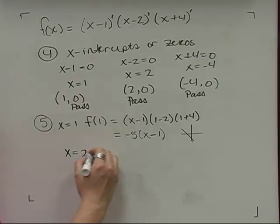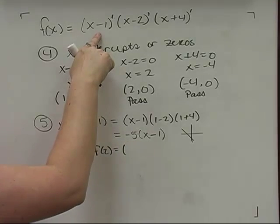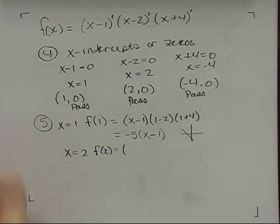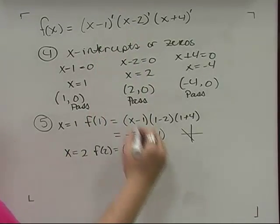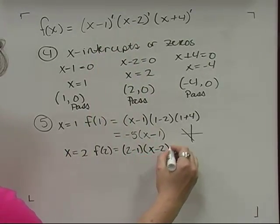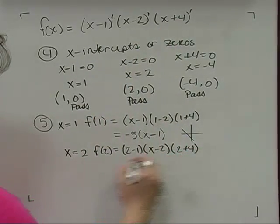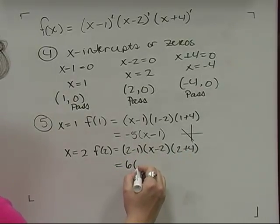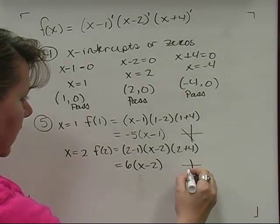At x = 2, I substitute 2 into all factors except the second: (2 − 1)(x − 2)(2 + 4) = (1)(x − 2)(6) = 6(x − 2). This is a linear function with positive slope, so the graph is increasing from left to right through the zero at x = 2.